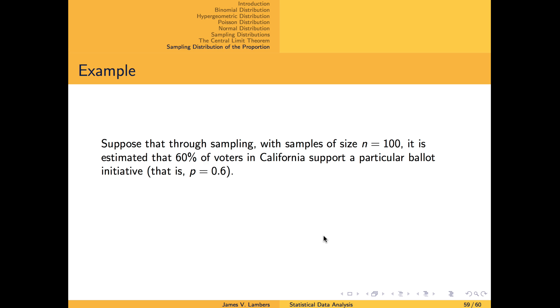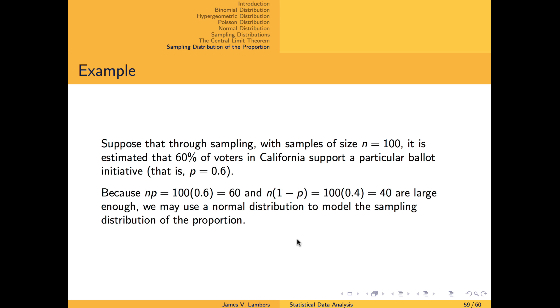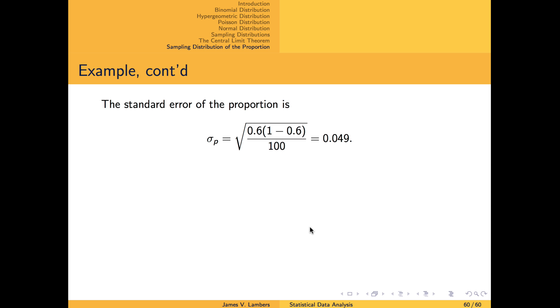As an example, suppose we estimate through sampling that 60% of California voters support a particular ballot initiative. By using a large enough sample size, like n equals 100, we can justify using a normal distribution to study the sampling distribution of a proportion rather than a binomial distribution. We then use our sample proportion, 0.6, for the mean of the sampling distribution of a proportion, and also use this value to compute the standard error of the proportion, since it is the only measure of the population proportion that we have.